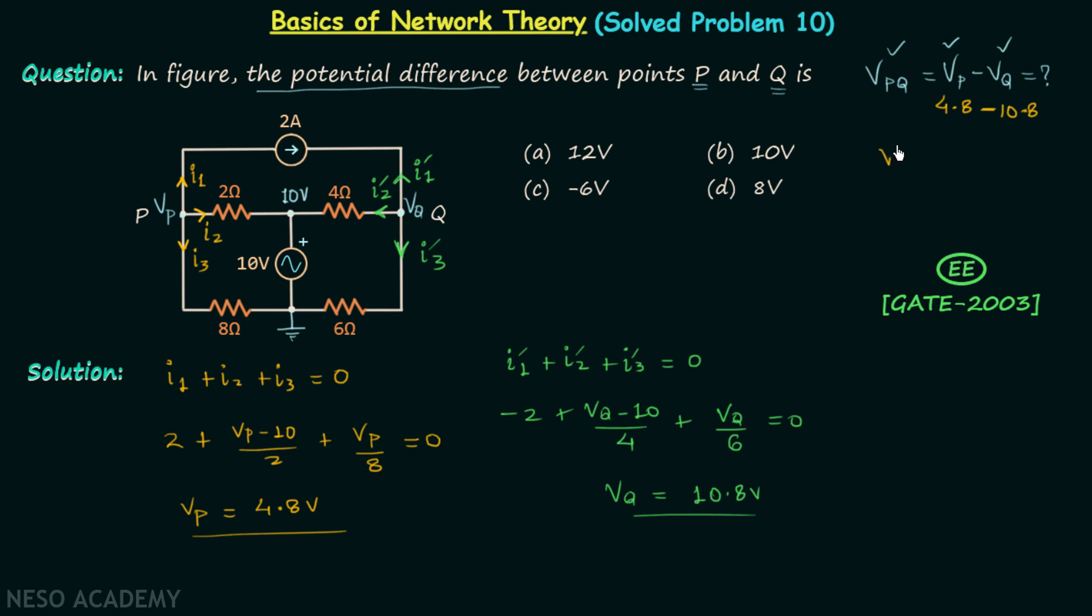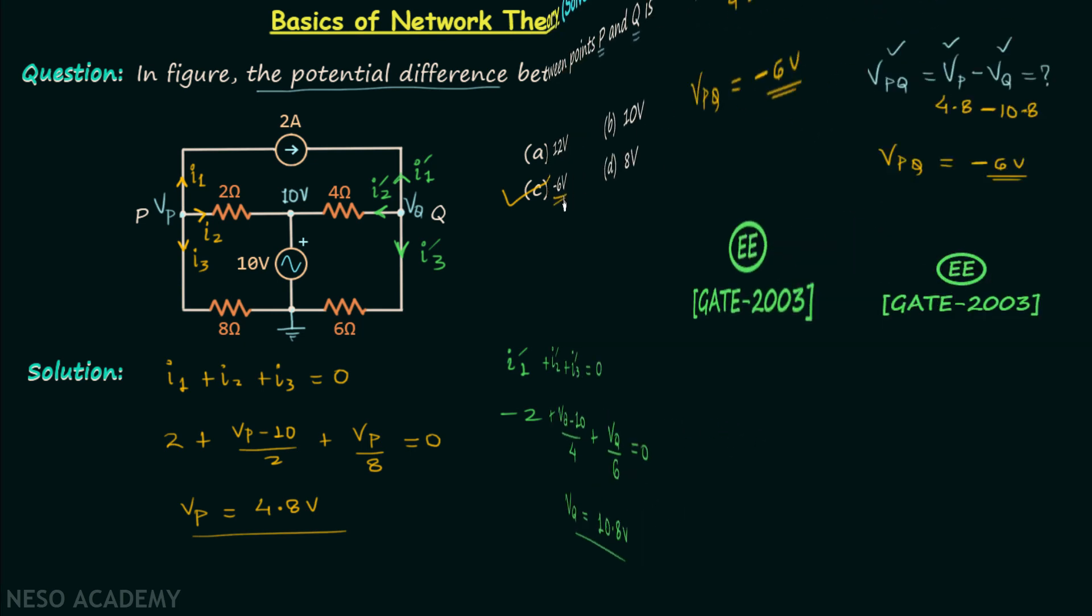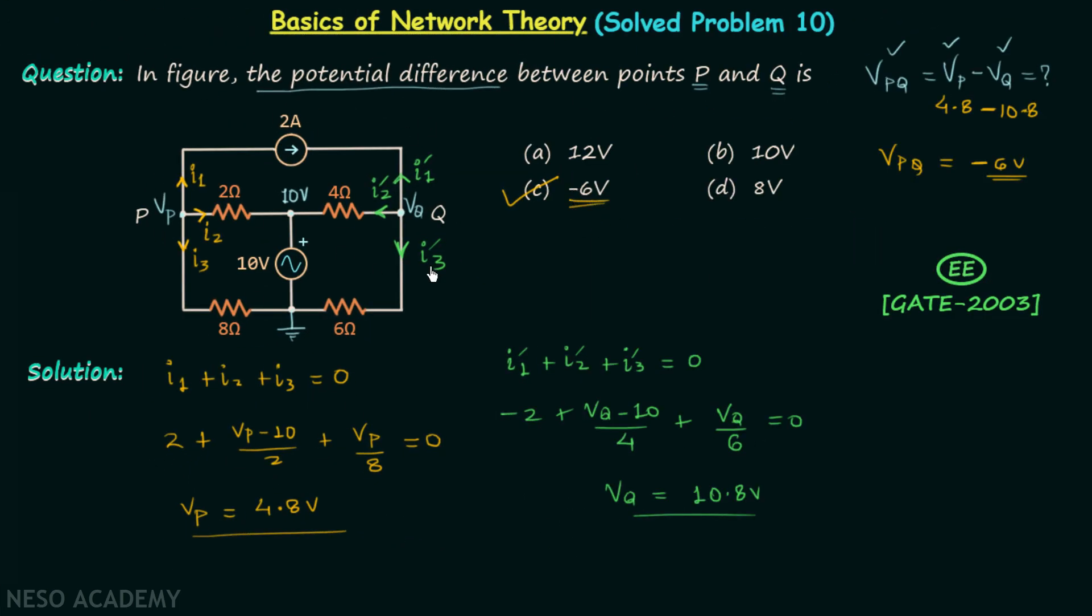When you subtract them you will find VPQ is equal to minus 6 volts. Therefore the answer is option C, minus 6 volts. So this is all for the problem, now we will move on to our homework problem.